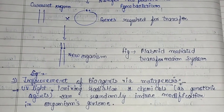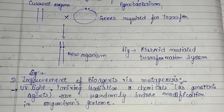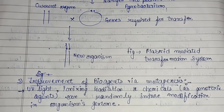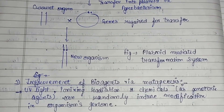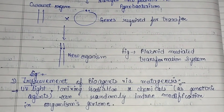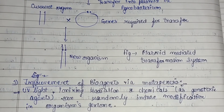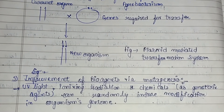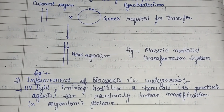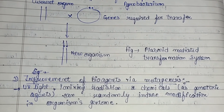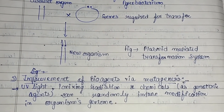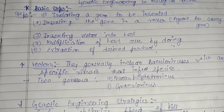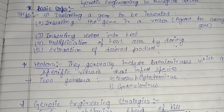The third method is improvement of bio-agents via mutagenesis — how changes in DNA sequence lead to improvement of bio-agents. UV light, ionizing radiations, and chemicals as genotoxic agents can randomly induce modifications in an organism's genome, modifying certain abilities of that particular bio-agent. Gamma rays have been shown to be more effective compared to UV and X-rays through experimental studies.